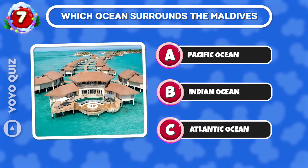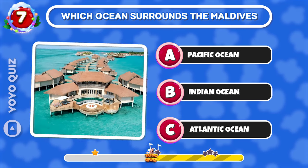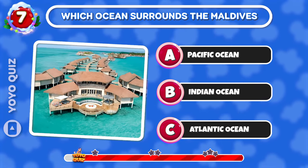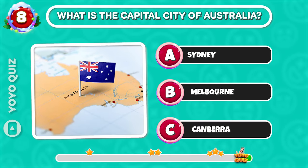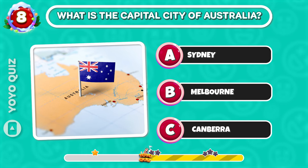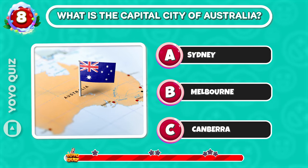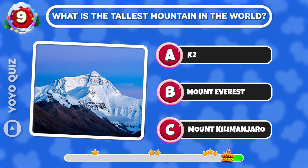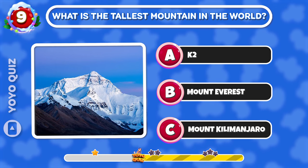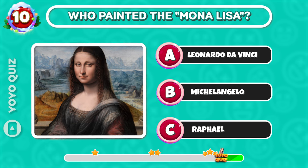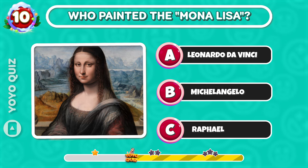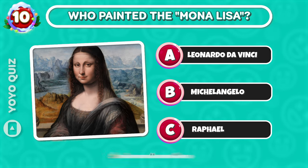Round 7: Which ocean surrounds the Maldives? It's B. Round 8: What is the capital city of Australia? C is the correct answer. Round 9: What is the tallest mountain in the world? Round 10: Who painted the Mona Lisa? A is the correct answer.